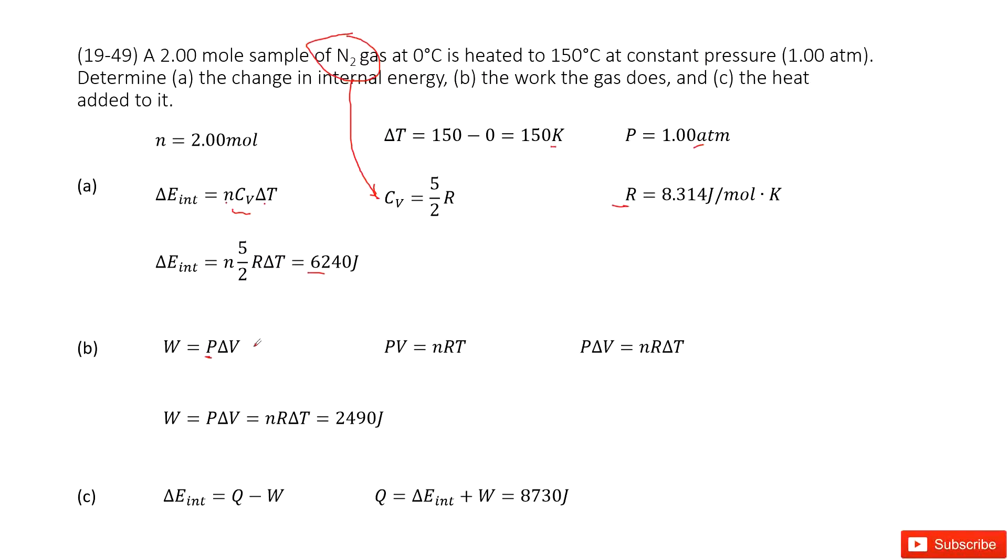We can write the ideal gas law PV = nRT. In this function, if V changes, the temperature will change.